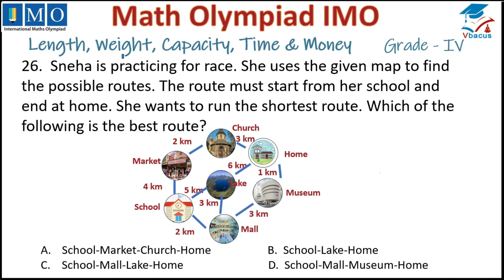Question 26: Sneha is practicing for a race and uses a map to find possible routes starting from school and ending at home. Route 1 — school to market: 4 km, plus church: 2 km, plus home: 3 km — total 9 km. Route 2 — school to lake: 5 km, lake to home: 6 km — total 11 km.